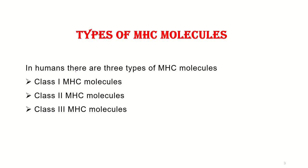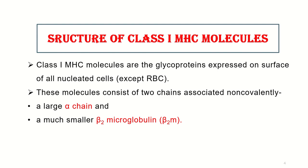Humans have three MHC molecules: Class 1 MHC molecules, Class 2nd, and Class 3rd MHC molecules. Now let's look at the structure of Class 1 MHC molecules.